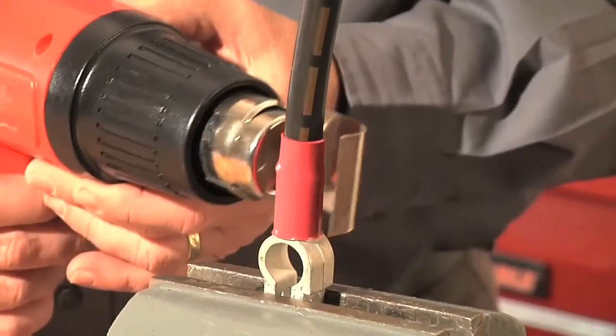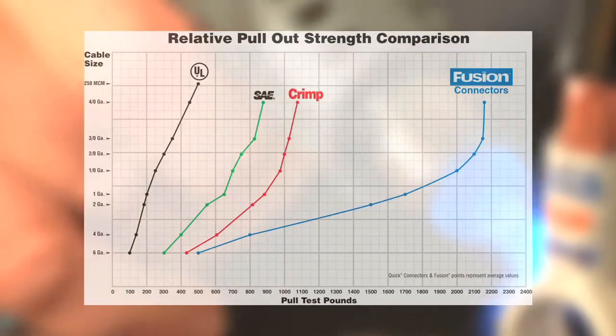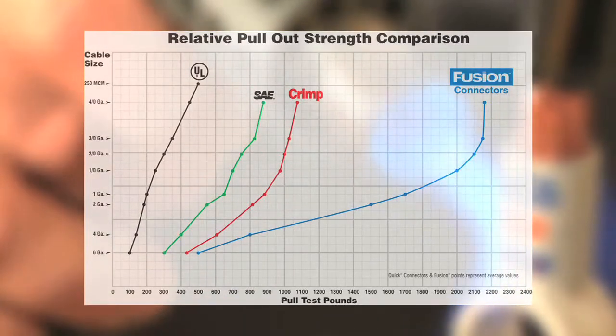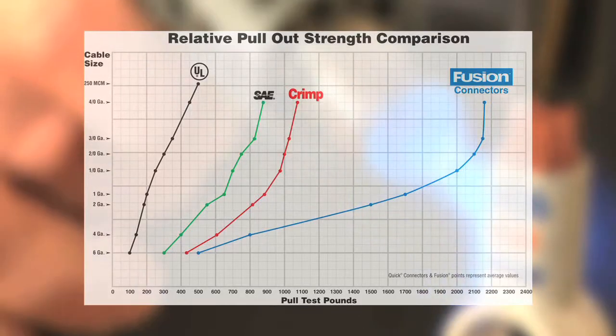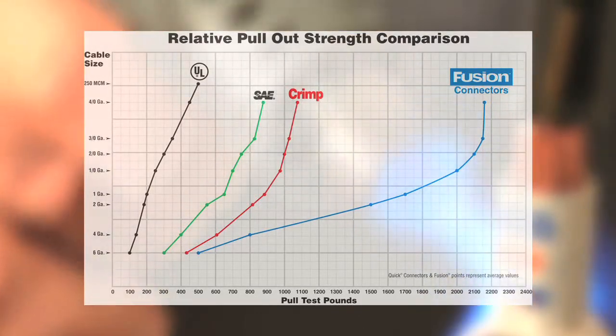Lastly, add heat shrink. Fusion strength is twice that of typical crimp or compression connectors. Fusion connectors are plated with a solderable tin, essential for maximum solder strength and reliability.